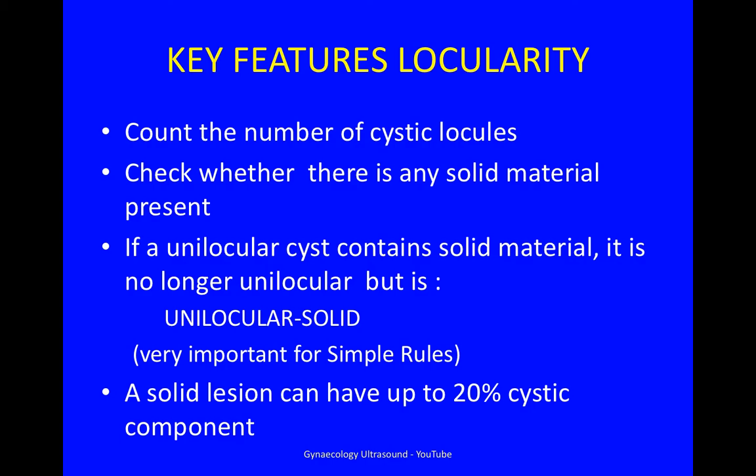If a unilocular cyst contains solid material, it is no longer unilocular but is now unilocular solid. This is very important for simple rules. A solid lesion can have up to 20% of a cystic component.